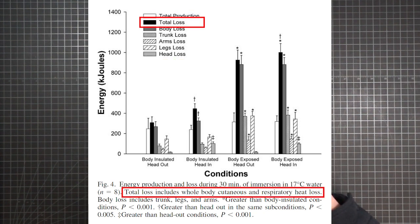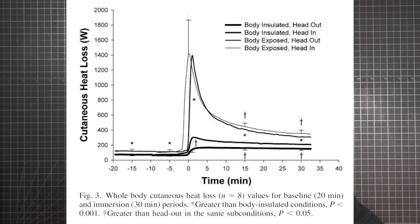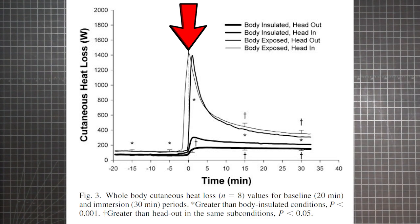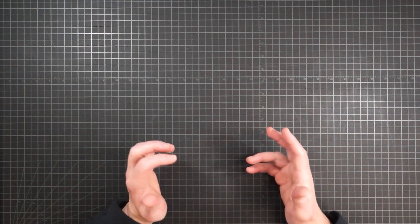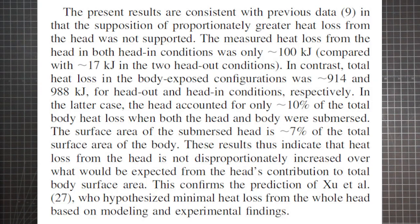So the chart shows the heat energy loss for each region of the body and the head. Note that total loss includes whole body cutaneous and respiratory heat loss, meaning it's the heat loss through your skin plus what is lost in your warm breath. Now figure three shows the heat loss through skin over time for each of the four conditions. You can see the big spike in heat loss at time zero when the participants were initially dunked into the water. And then over the next 30 minutes of submersion, you can see how each condition varied.